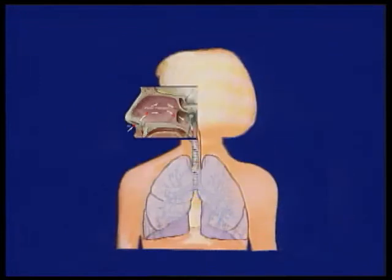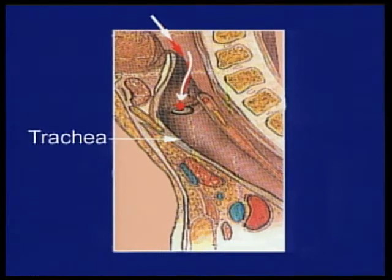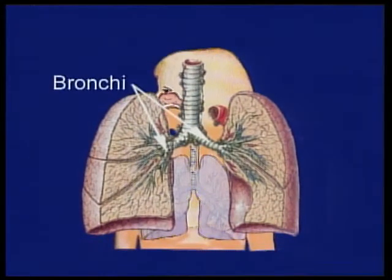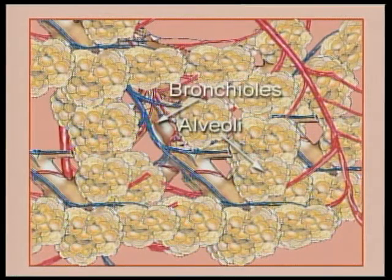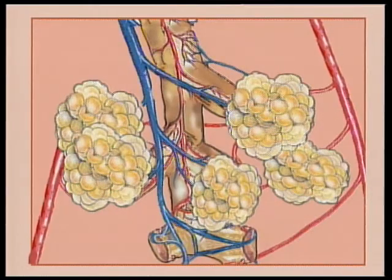Air then goes down the trachea, or the windpipe. The trachea branches out into two branches known as bronchi, which enter the lungs. Inside, the bronchi branch out into smaller and smaller tubes known as bronchioles, ending in tiny air sacks called alveoli.